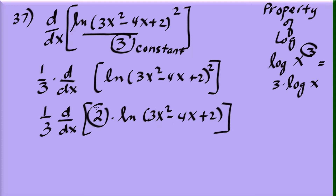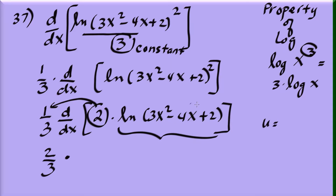This 2 can combine with the one-third out front, giving two-thirds times the derivative of the natural log of that quantity. Our u is 3x squared minus 4x plus 2, and u prime is 6x minus 4.